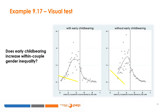The left panel represents the distribution of the wife's share of household income among married couples in which the wife experienced early childbearing. The right panel represents the corresponding distribution for couples in which the wife did not experience early childbearing. On each panel, the vertical line touches the x-axis at the point where the wife's share equals that of her husband — that is, gender equality in earned incomes, where the wife's earned income accounts for 50% of total household income. To the left of that vertical line, a wife earns less than her husband; to the right, she earns more.